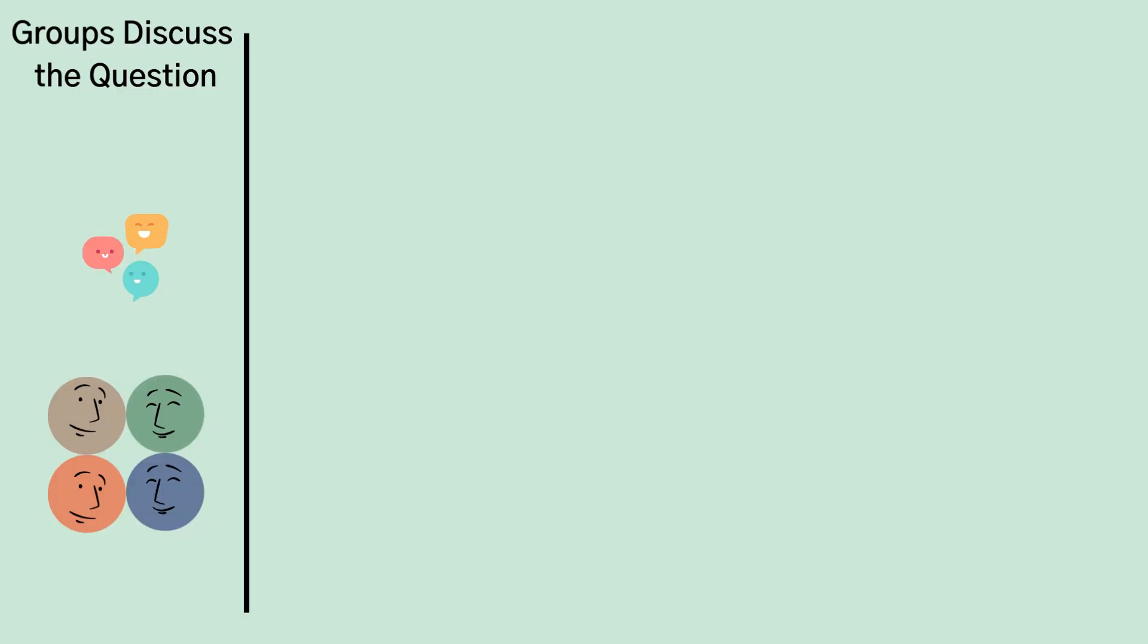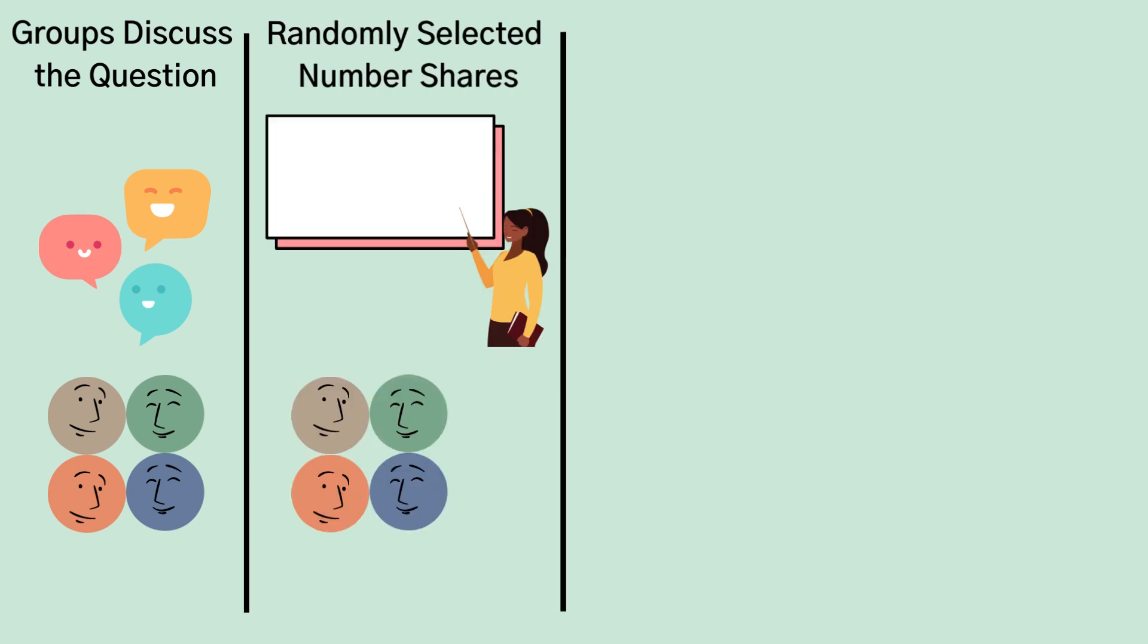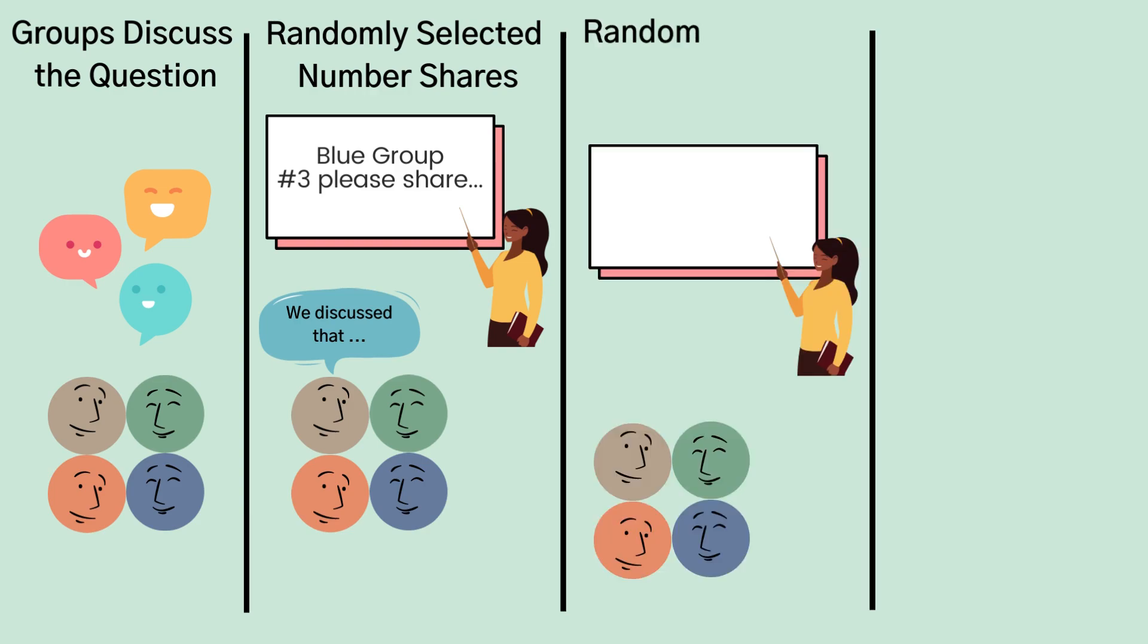At the end of time, the teacher instructs groups that they will now share ideas with the whole class if their group and number are selected. To promote active listening and engaging conversations, students must first acknowledge the ideas of the previous group using a sentence frame such as: